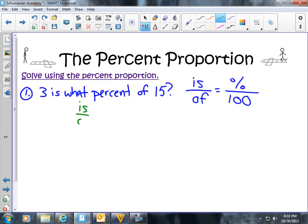Is over of equals percent over 100. Now you don't necessarily have to write this proportion down to begin with, but if you want to get comfortable, I recommend it. Let's go ahead and fill in what we know. Well, the 100 is our one constant. It's always going to be 100 no matter what.